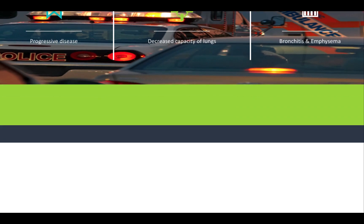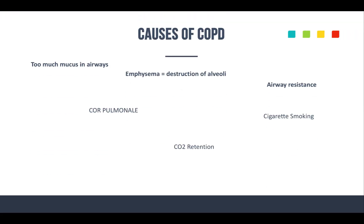What causes COPD and what are some things you'll see in your assessment? There's too much mucus in the airways — an overgrowth of the mucus glands — which causes excess mucus and issues with breathing. In emphysema specifically, there's destruction of the elastic walls of the alveoli, causing air trapping and sometimes eventual rupture. The airway has marked resistance to air movement, you get the barrel chest presentation, and cor pulmonale — right-sided heart failure — from the heart working harder to pump blood to the diseased lungs. Of course, cigarette smoking is a major cause.